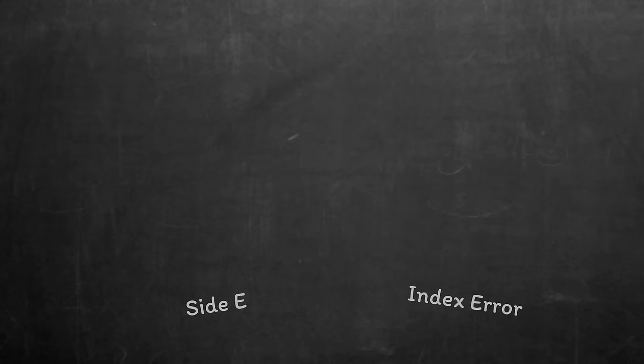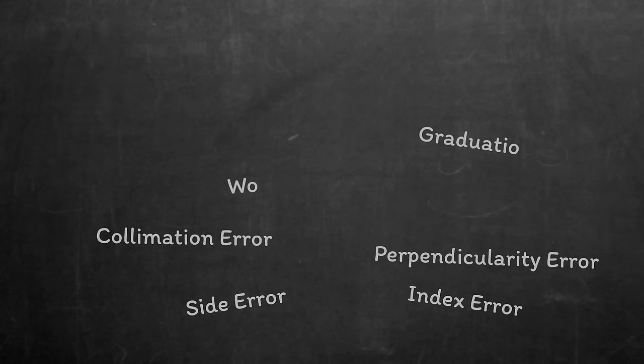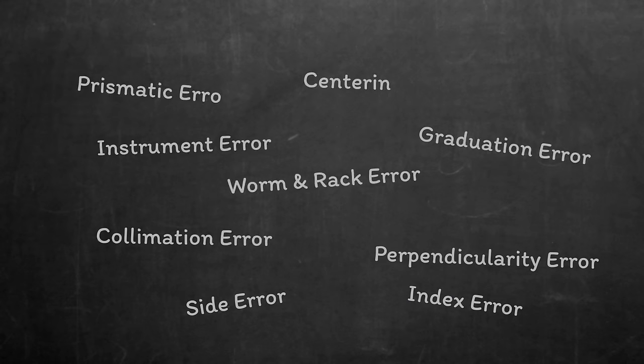There are actually many different errors possible on a sextant. We can split them into two different groups, correctable and non-correctable.